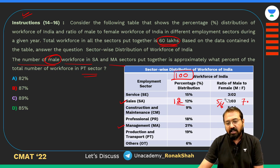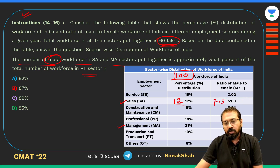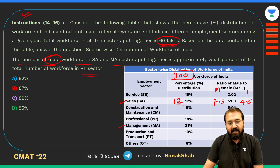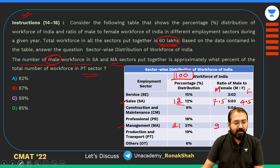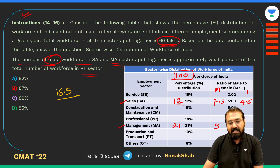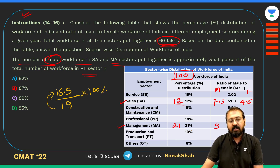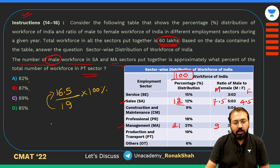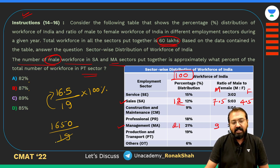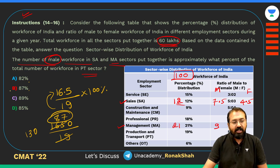In SA: male = 7.5, female = 4.5. In MA sector: 21% of 100 = 21, and male is 3/7 of 21 = 9. Total male in SA and MA = 7.5 + 9 = 16.5. PT sector is 19% of 100 = 19. So we need 16.5 as a percentage of 19: (16.5/19) × 100 = 1650 ÷ 19 ≈ 87%. Answer is approximately 87%.